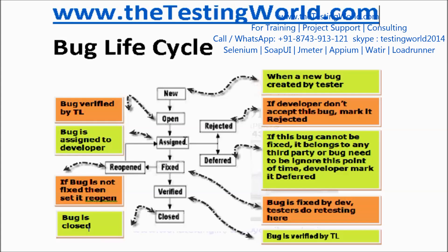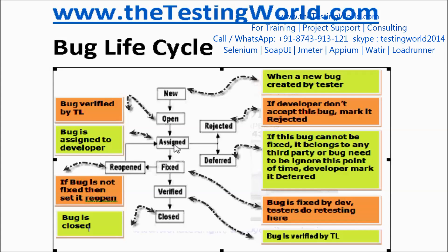At this point the developer has the bug. The developer will also check if it's a valid bug or not. Here we can have three conditions. First, the developer checks it and is not able to replicate the bug — developer is not accepting it as a bug. So the developer will reject it and the bug will be 'Rejected'.